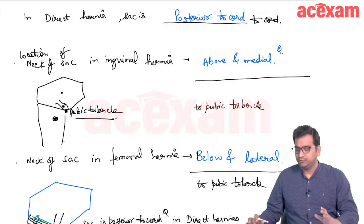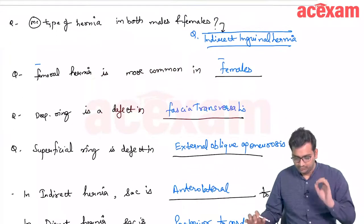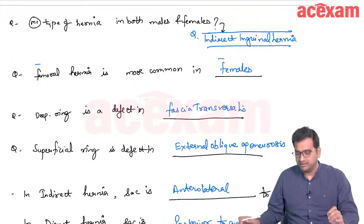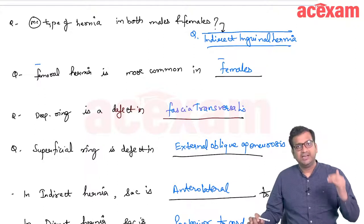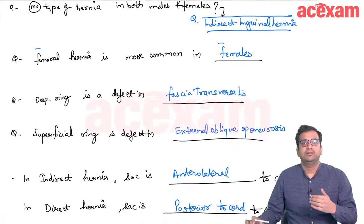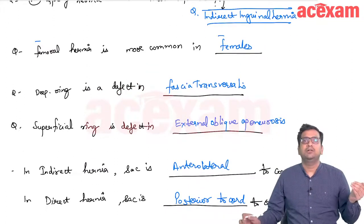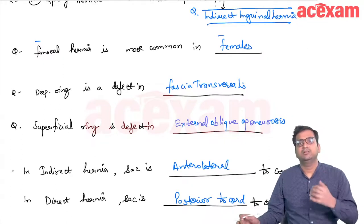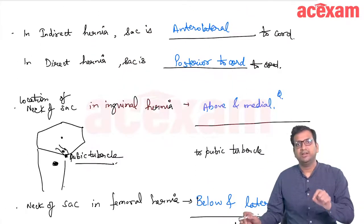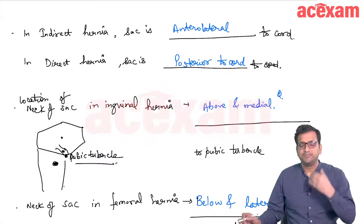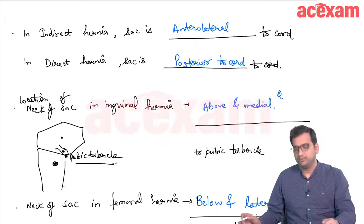Summary of high-yield points: Most common hernia in males and females is indirect inguinal hernia. Femoral hernia is more common in females. Deep ring is a defect in fascia transversalis. Superficial ring is a defect in external oblique aponeurosis. In indirect hernias the sac is anterolateral to the cord; in direct hernias the sac is posterior. Neck of the sac in femoral hernias is below and lateral to the pubic tubercle; in inguinal hernias it is above and medial.